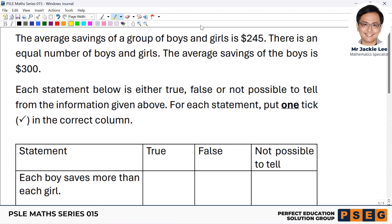We have a group of boys and girls. The average saving for them is $245. We have equal number of boys and girls. Every saving just for the boys is $300.